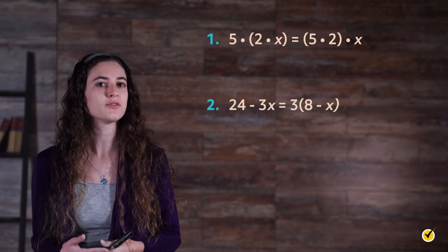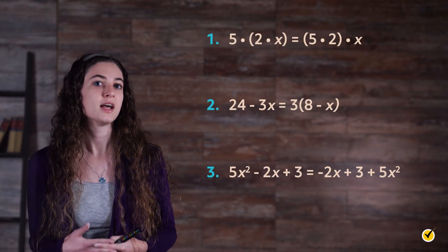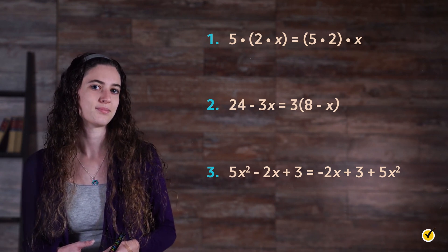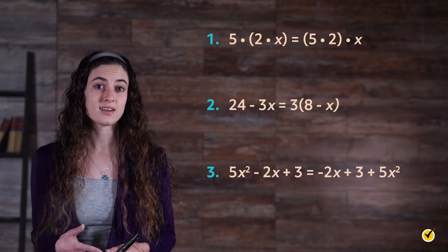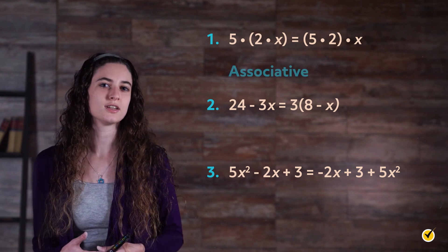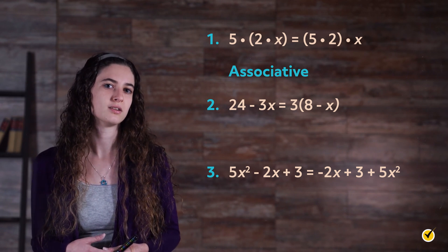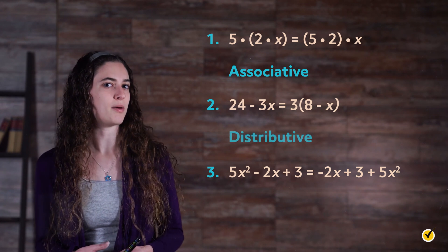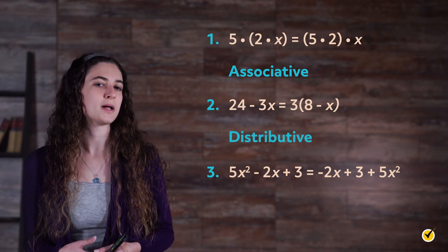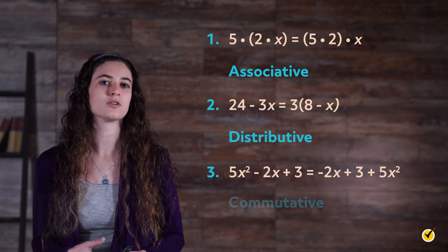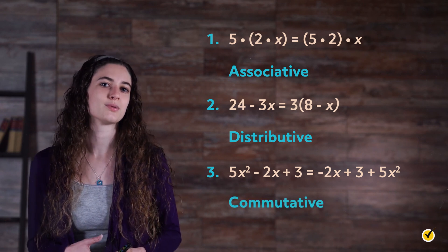Now that we've gone over the three properties, let's test your memory. For each problem, state the property — commutative, associative, or distributive — that justifies the statement. Go ahead and pause the video if you need more time. The answer for number 1 is the associative property, because the parentheses are moved to order the multiplication. The answer for number 2 is the distributive property, because 3 is multiplied by both terms in the parentheses. That leaves us with the answer to number 3 being the commutative property, because we've simply rearranged the terms.